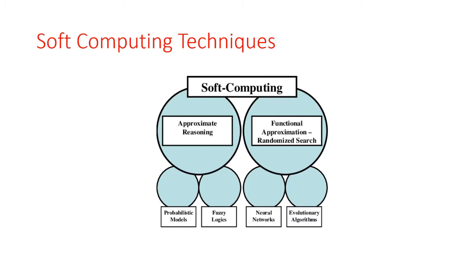Unit 1 covers evolutionary algorithm, fuzzy logic, and probabilistic models. In units 2, 3, and 4 we study in detail the neural network — its architecture, working, and which applications are used.